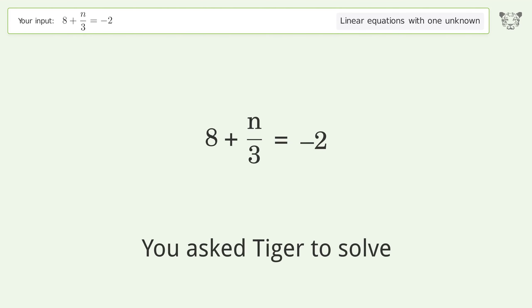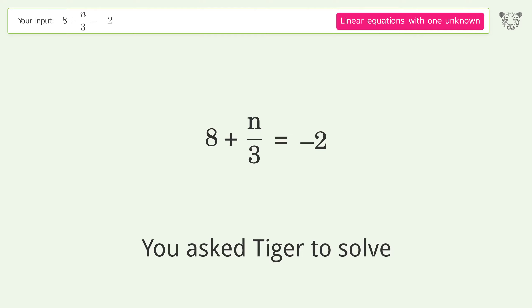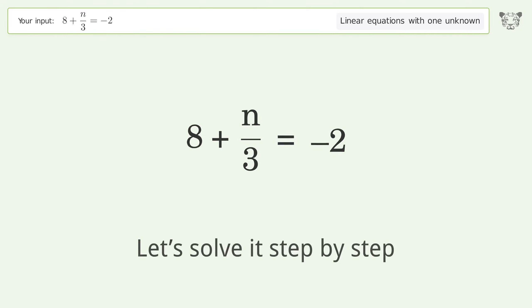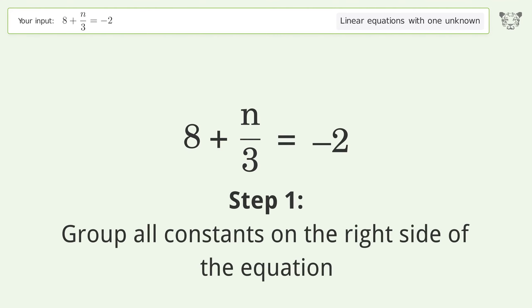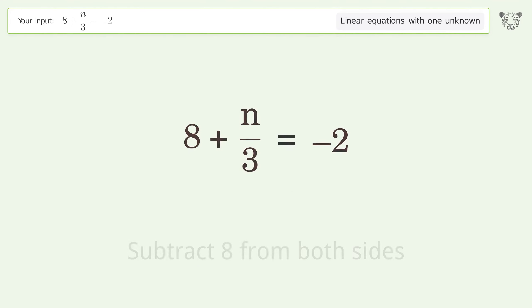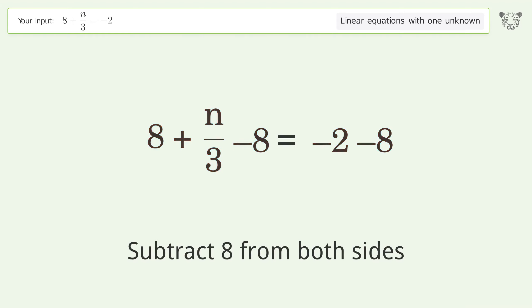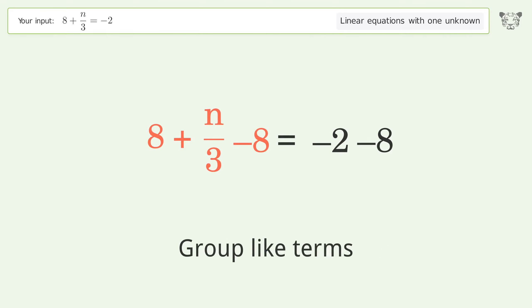You asked Tiger to solve this — it deals with linear equations with one unknown. The final result is n equals negative 30. Let's solve it step by step. Group all constants on the right side of the equation: subtract 8 from both sides, then group like terms.